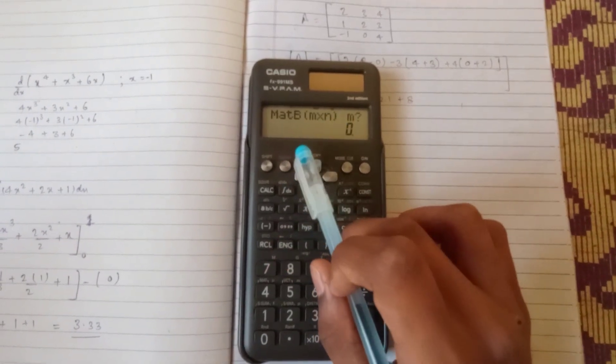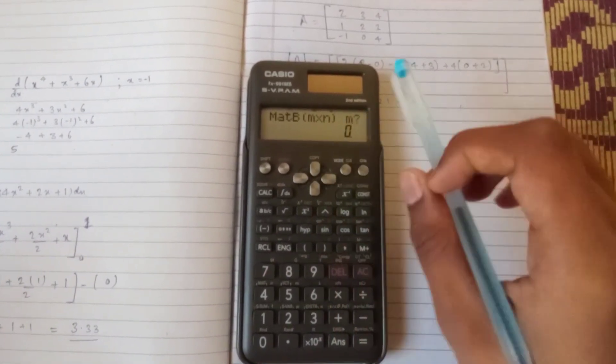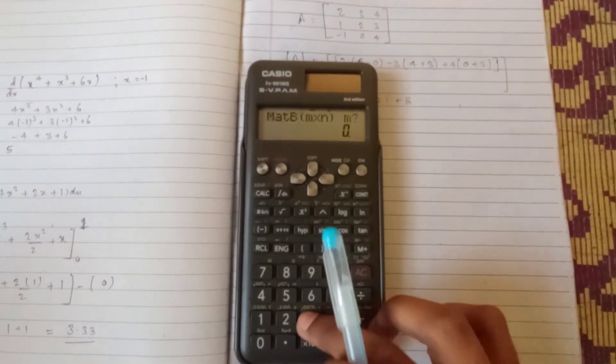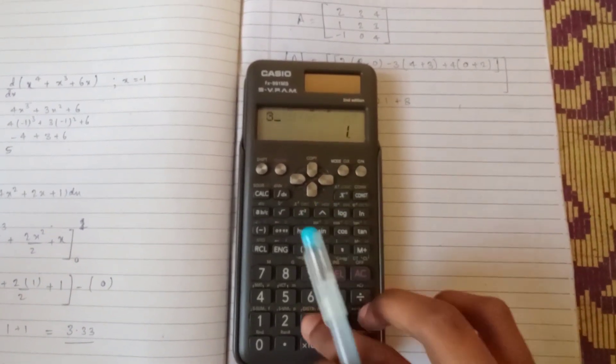Then we have to put rows and columns according to the question. It's a 3 into 3 matrix, that means row is equal to 3 and the column is equal to 3.